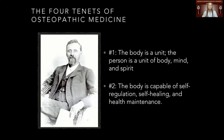The tenets of osteopathic medicine express the underlying philosophy. The first tenet: the body is a unit — the person is a unit of body, mind, and spirit. The second tenet: the body is capable of self-regulation, self-healing, and health maintenance. Think about how amazing our immune system is with this process.